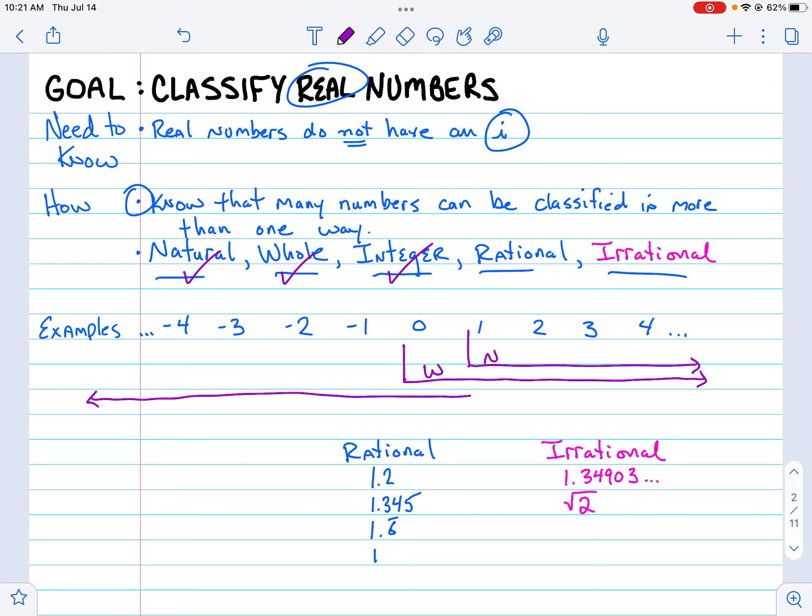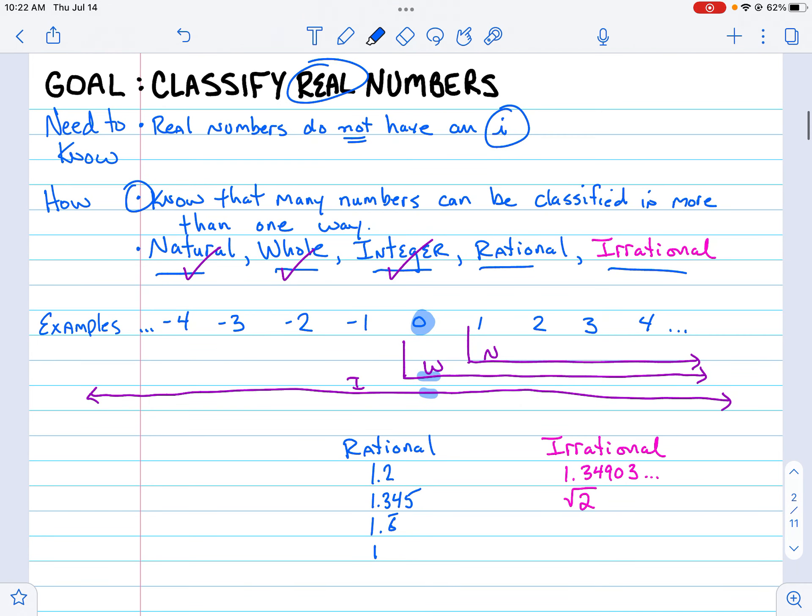Integers start way over here to the left at what we might refer to as negative infinity and go the whole way up to positive infinity, but we stick to positive and negative whole numbers. So these are integers. Now, just for clarification, if we pulled the number negative 3, that would only be an integer. If we took the number 0, it would be a whole number and an integer. And if we took the number 3, it would be natural, whole, and integer. So different numbers can have different amounts of classifications associated with them—that's just based on their definition.